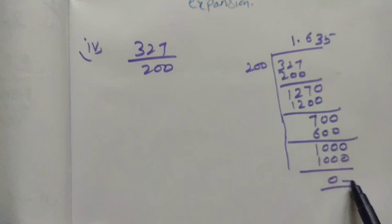And we get remainder equal to 0. Remainder equal to 0, so it is terminating decimal expansion.